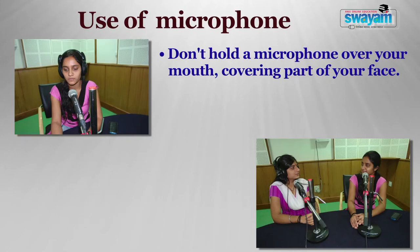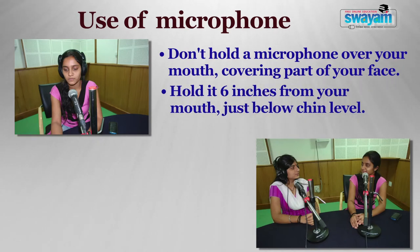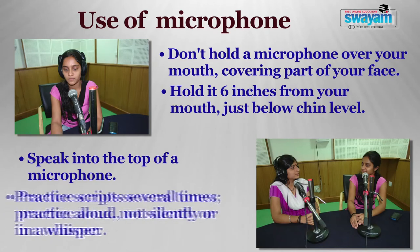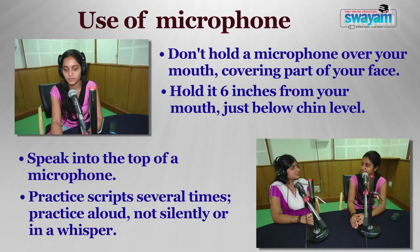Then comes the use of the microphone — another part of camera presence. Don't hold a microphone over your mouth covering part of your face. Hold it at least 6 inches from your mouth, just below chin level. Speak into the top of the microphone. If you turn away from the camera, bring the microphone with you. During an interview with a single microphone, use the arm next to the guest to hold the microphone so you don't reach across your body when moving it for the guest to speak. Collar mics are a better choice, but always ensure the microphone does not cover your face.